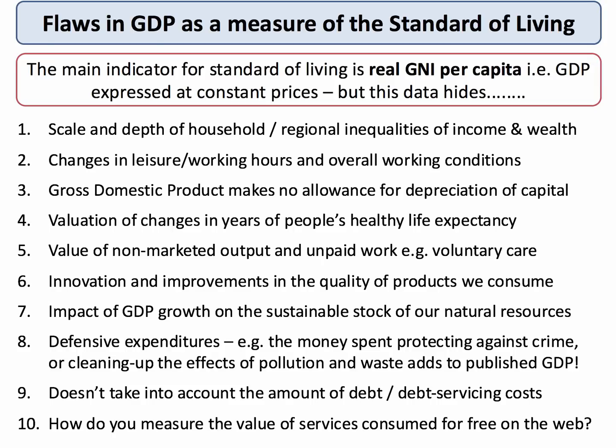Point five is a common point made in exams: the value of non-marketed output. A lot of socially useful and economically valuable work is not actually sold in markets and doesn't have a market price. For example, the value of output of people working for charities, contributing to self-help groups, or the value of work done in the home looking after children or an elderly, infirm relative. This is important social output with a social welfare dimension, and it's not necessarily picked up by the GDP accounts. To that extent, GDP underestimates the true amount of economic activity.